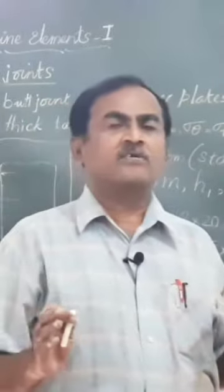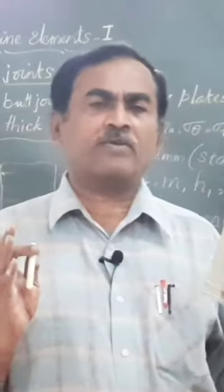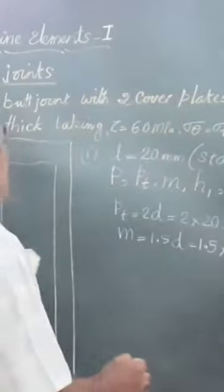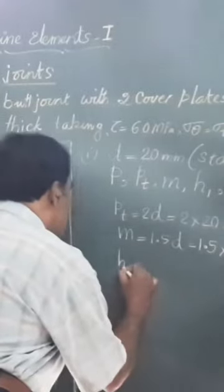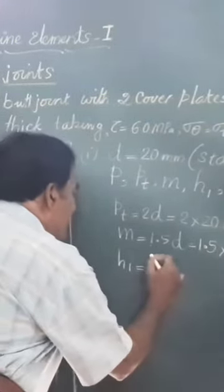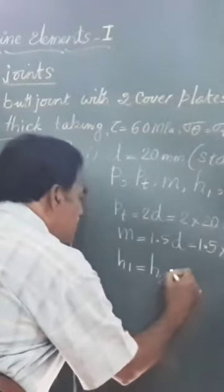In a butt joint which is made using two cover plates of equal width, in the tabular column you find this value as h1. The thickness of the less wide cover plate is equal to h2. Both will have the same width.